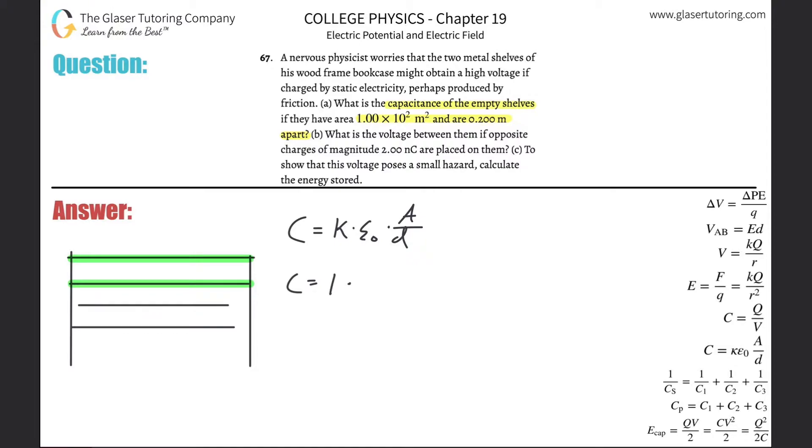The permittivity of free space is going to be about 8.85 times 10 to the minus 12, multiplied then by the area they told us is 1 times 10 to the 2 square meters, and the distance is 0.2. I'm just going to plug it in and solve. So 8.85 times 10 to the minus 12 multiplied by 1 times 10 to the 2 divided by 0.2.